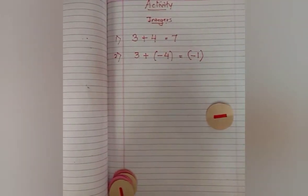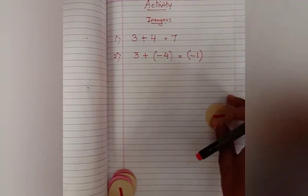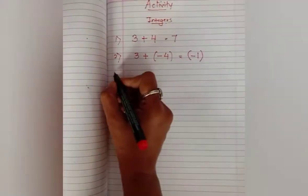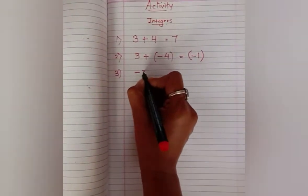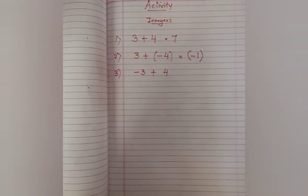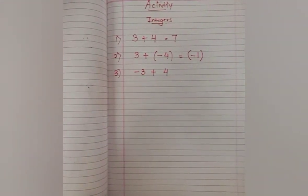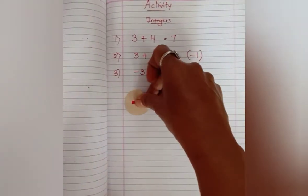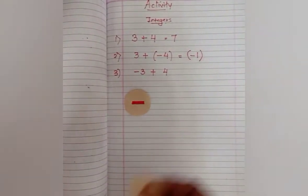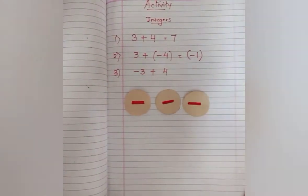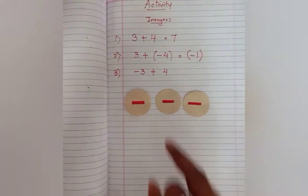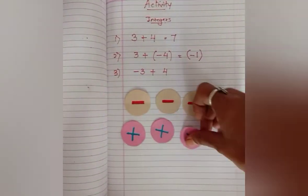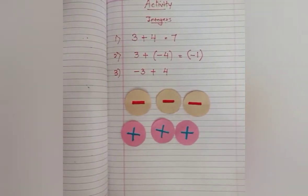Now let us do another activity. We will take the same numbers but swap signs: minus three plus four. So again, three negative circles — one, two, three. Now four is positive, so four positive circles: one, two, three, and the fourth positive circle.